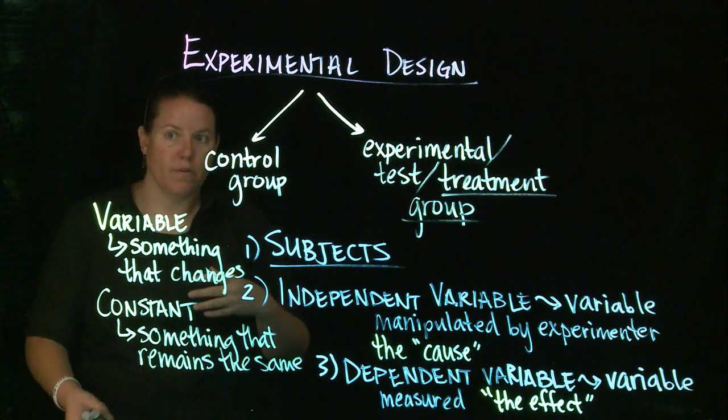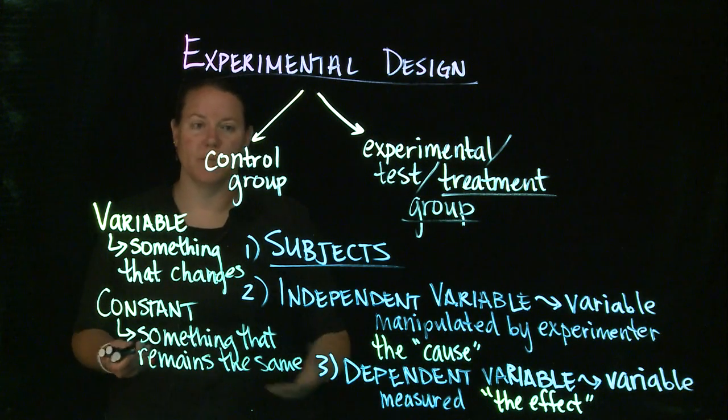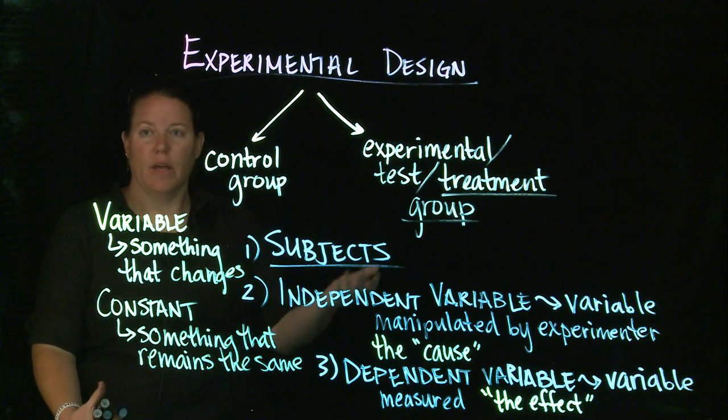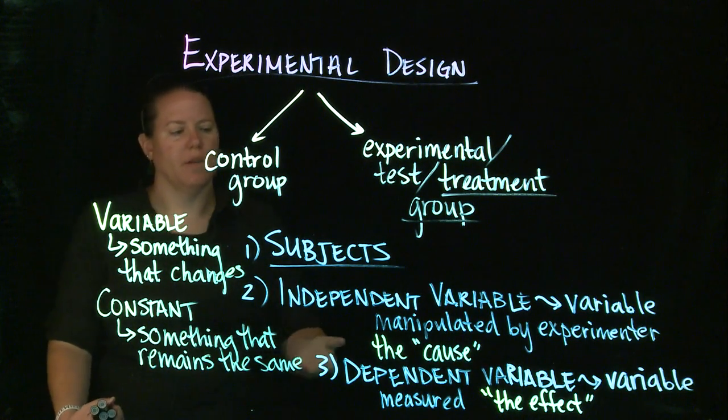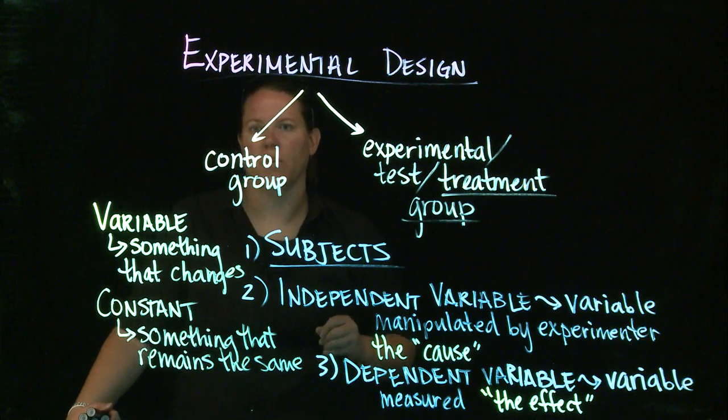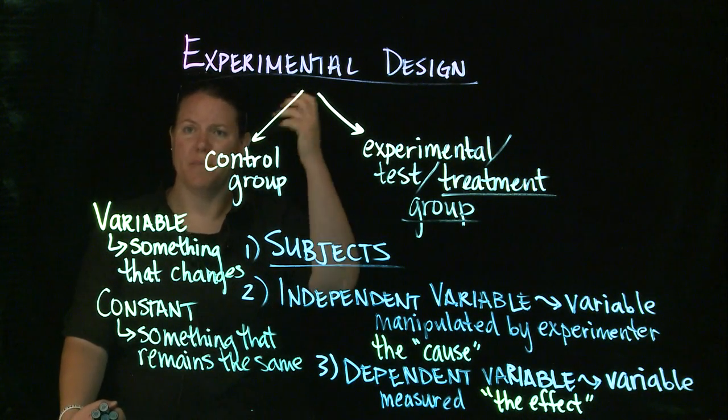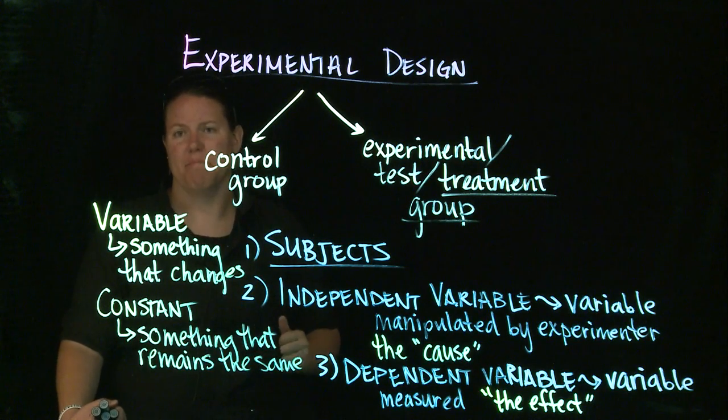In the control group, if we don't have to consider human subjects or whatever, you would just keep that as the baseline and not manipulate something. The independent variable and the dependent variable would not be as true in the control group because you're keeping them as the control, they're the ones that stay the same.